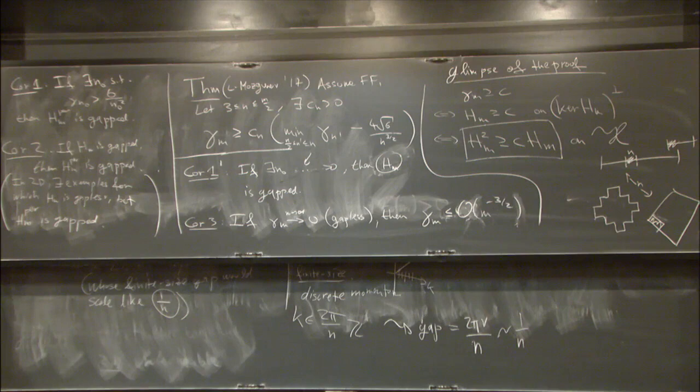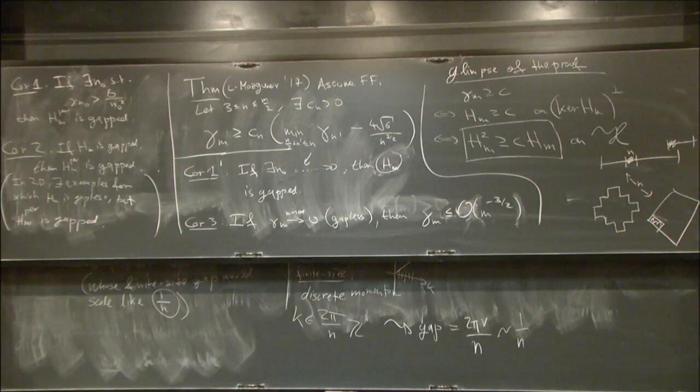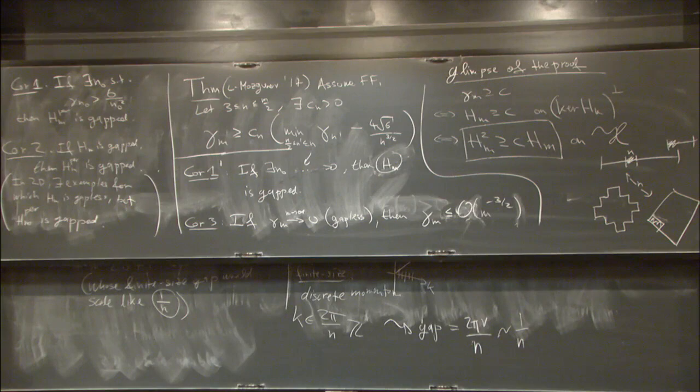Regarding the 2D theorem: in one dimension the notion of a subsystem is clear — it's a sub-chain. In 2D one must choose the shape of subsystems, and not all shapes work. It turns out that rhomboids are the right shape. The parameter N becomes the linear size, and one obtains a bound with N^{-3/2} again, for any frustration-free model on any 2D lattice with finite-range interactions.